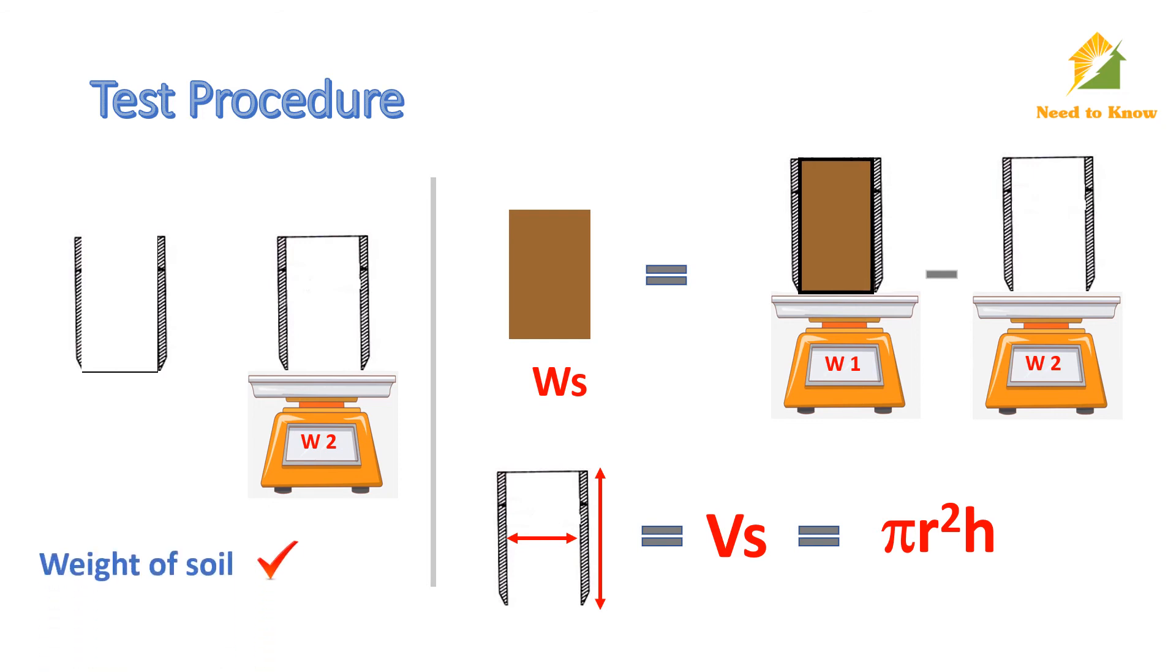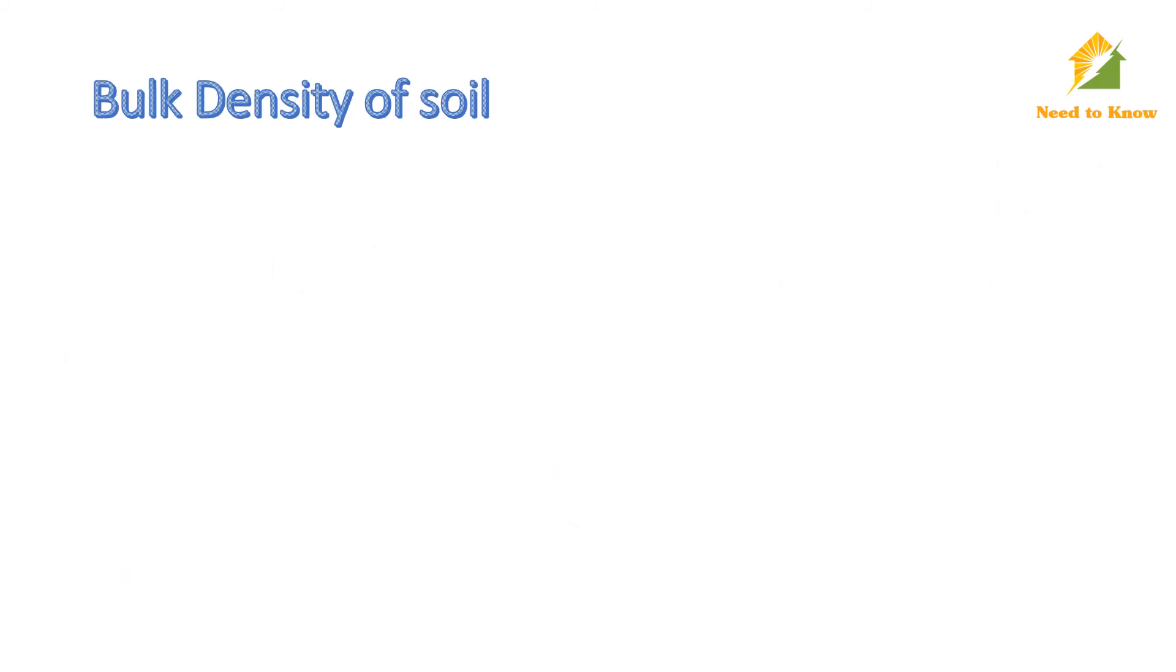Now, we have weight of soil and the volume occupied by that soil. From this, we determine bulk density of soil. Bulk density can be determined using this formula, where Wc is the weight of soil in the core and Vs is the volume of soil. This will be the wet bulk density.